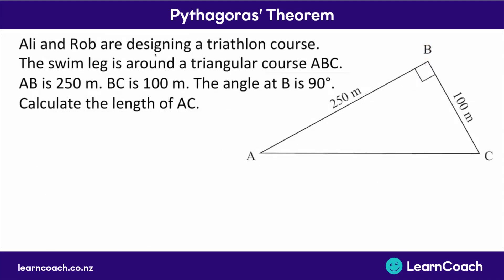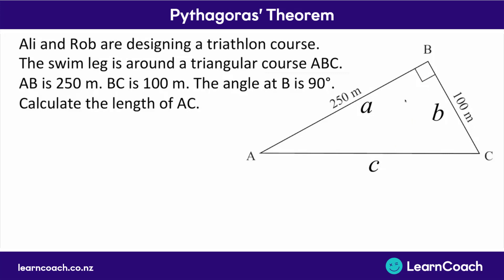Here's one where Ellie and Rob are designing a triathlon course. The swim leg is around a triangular course, a to b to c. Now a to b is 250 metres, b to c is 100 metres, and we need to work out the length of a to c — they tell us the angle at b is 90 degrees. This is a Pythagoras question. This side is going to be labelled c because it's the longest side and it's the one opposite the right angle. So we label this one c and label the two sides we know a and b.